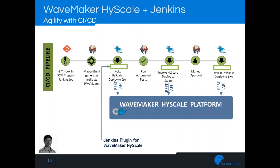Many businesses use pipeline mechanisms to automate release automation, and Jenkins is widely used. WaveMaker HighScale provides a mechanism to easily integrate with Jenkins through a specialized Jenkins plugin that integrates in a configuration-driven manner, allowing the pipeline to deploy applications to a containerized environment. HighScale also provides RESTful APIs so you can integrate with other tools as well.